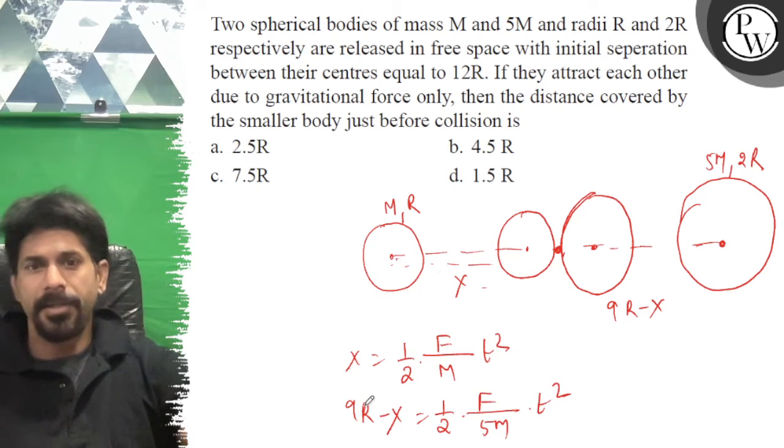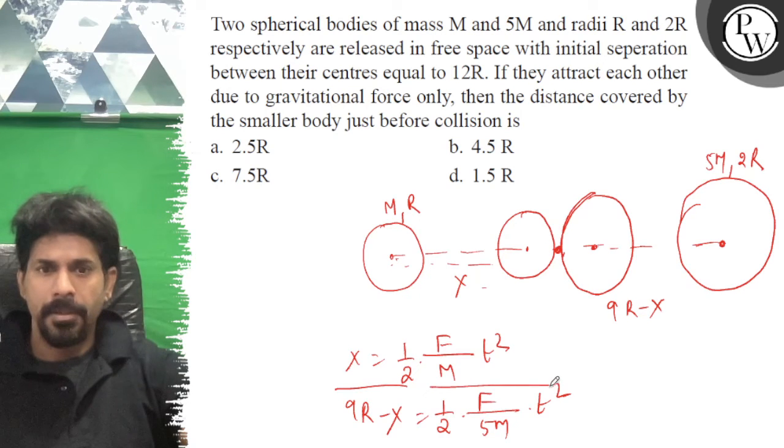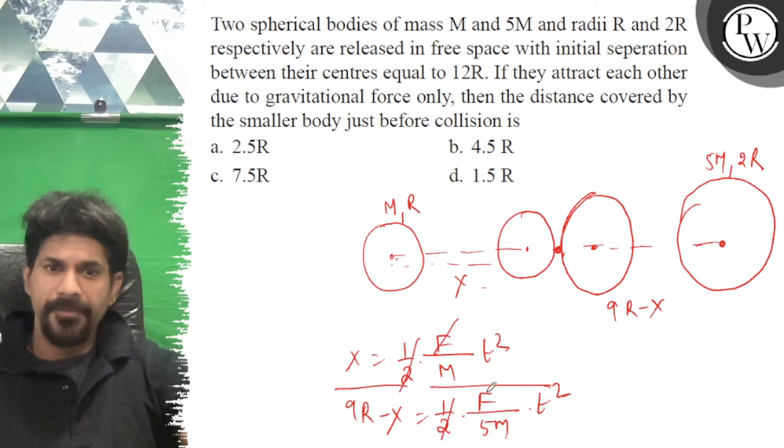Now dividing both sides, 1/2 cancels with 1/2, t squared cancels, m cancels. So x equals 45R minus 5x.